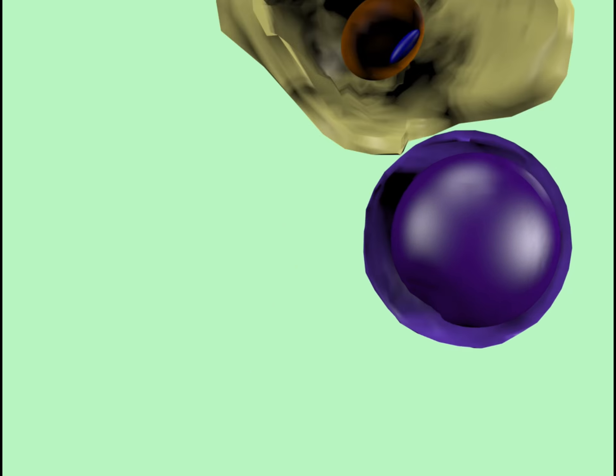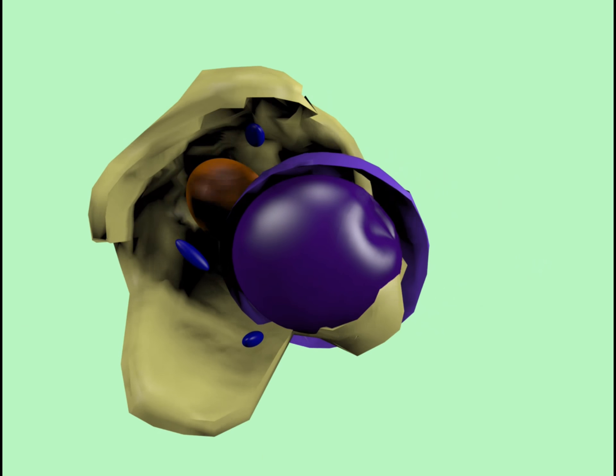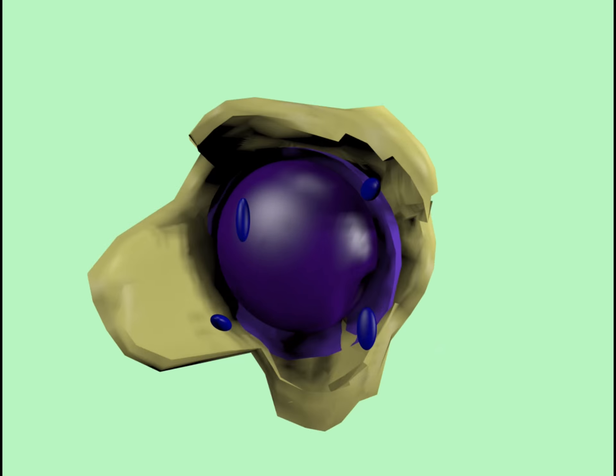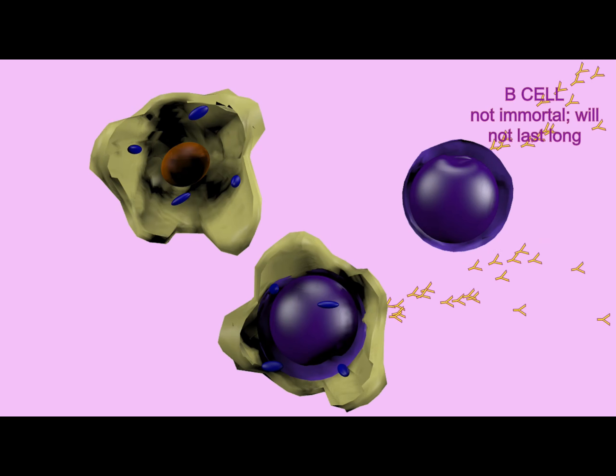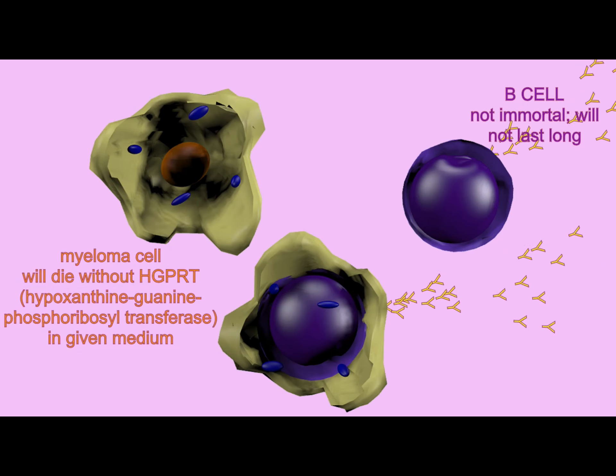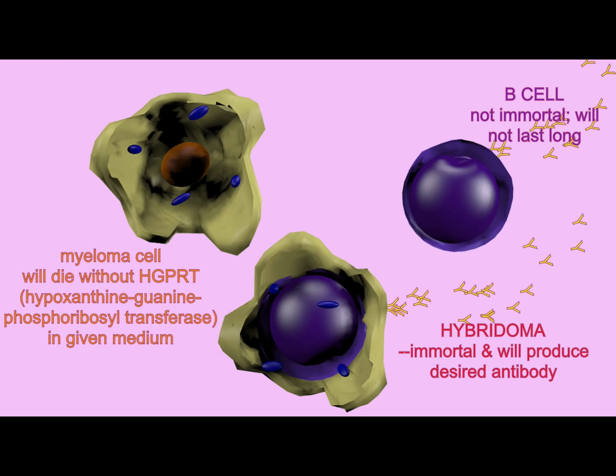Therefore, the only cells which would remain are those cells known as hybridomas. They have resulted from two different cells fusing, they will produce the antibody of interest, and they are immortal having come from a cancer cell. This is how monoclonal antibodies are produced.